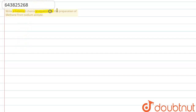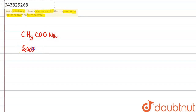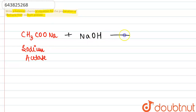Write a balanced chemical equation for the preparation of methane from sodium acetate. We are going to take sodium acetate, which is the sodium salt of acetic acid. When sodium acetate reacts with sodium hydroxide (NaOH), a reaction takes place.